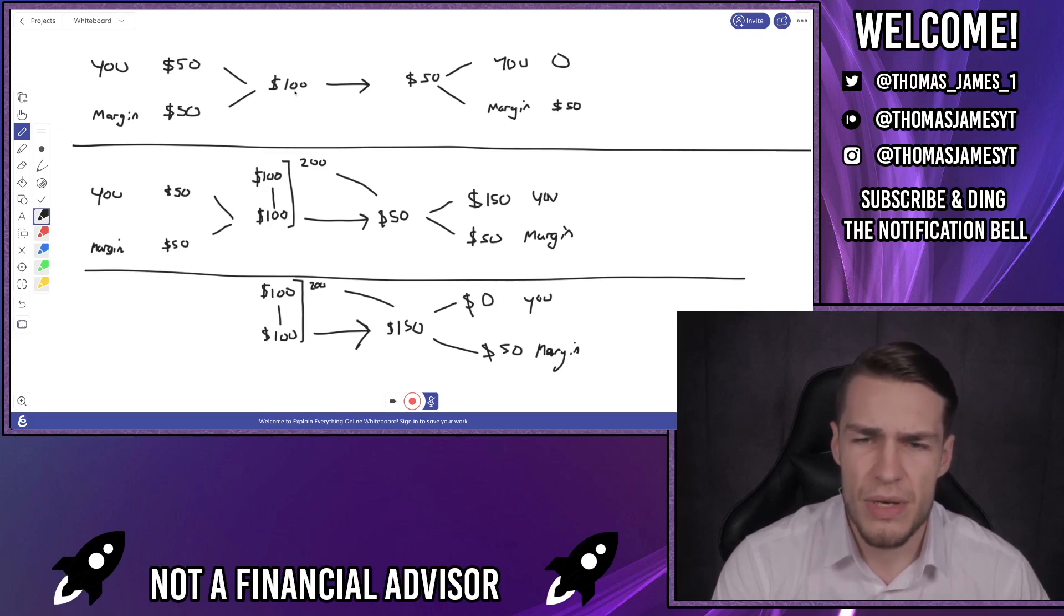If the trade goes against you and the value of your shares falls to $50, you get liquidated because the trading platform takes back their $50 and leaves you with nothing because obviously the trading platform doesn't want to lose any of their own money. Okay, so that's a long position. But how exactly does it work with a short position?